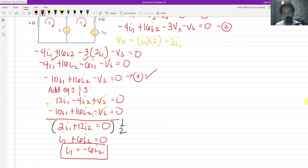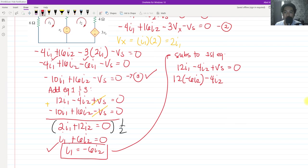Using that, we can eventually substitute it to our first equation. So substitute to the first equation. Our first equation would be 12 I sub 1 minus 4 I sub 2 plus V sub S equals 0. So we have 12 times I sub 1, which is negative 6 I sub 2, minus 4 I sub 2 plus V sub S equals 0. 12 times negative 6 is negative 72, so negative 72 I sub 2 minus 4 I sub 2 plus V sub S equals 0. We have negative 76 I sub 2 plus V sub S equals 0.